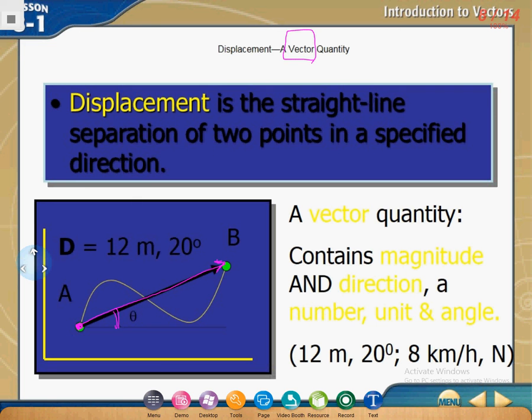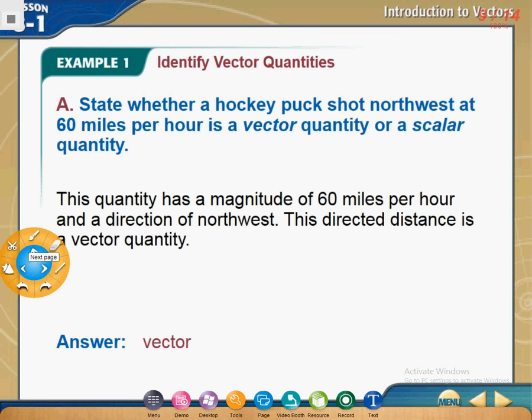When you have any number like this, from this number you can see if it's a vector or scalar. Since we have an angle, this means this is a vector. When you find it, you will find like this: 12 meters, this is the magnitude, and this is the direction. Again here, this is the magnitude, this is the direction. N means north. This is how can you distinguish between vector and scalar. Again, vector means direction and magnitude.